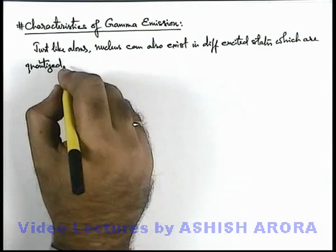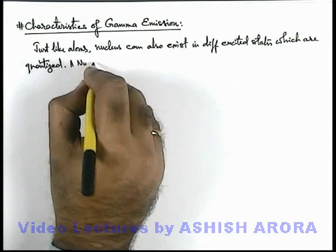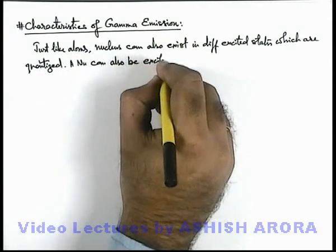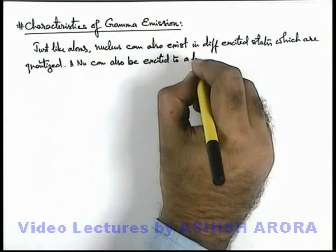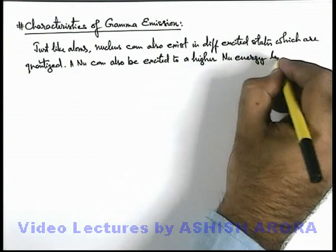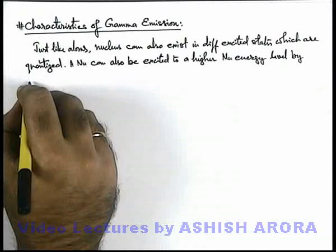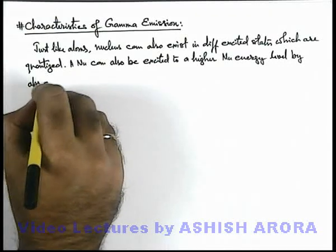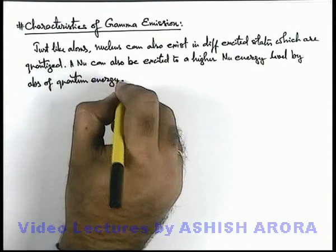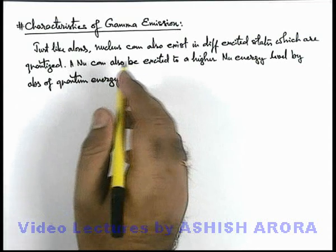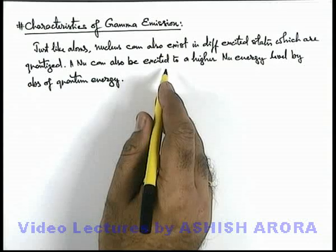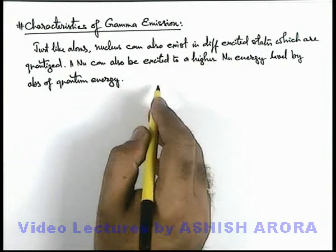We can also add that a nucleus can also be excited to a higher nuclear energy level by absorption of quantum energy — that's the energy which is the difference of energies of the two respective energy levels in which the transition is taking place. And similarly, when the nucleus makes a transition from a higher energy level to a lower energy level, it will emit energy.